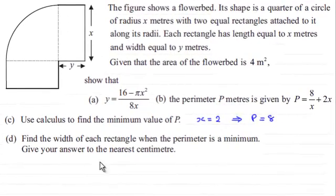Hi, now in part c of the question we found that by using calculus the minimum value of the perimeter p meters of the flower bed here was equal to 8 when x equaled 2.